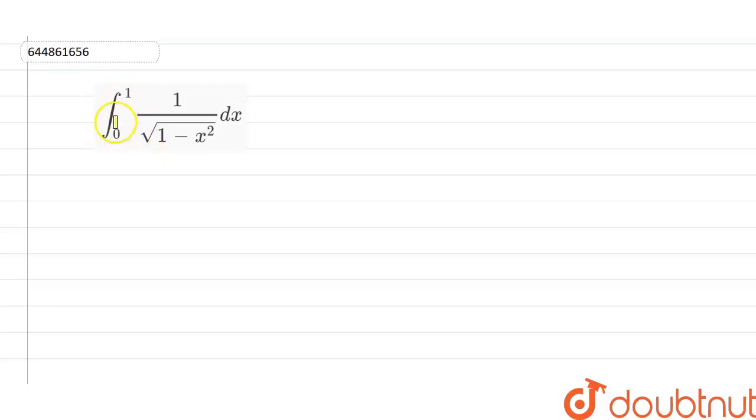Hello guys, we have integration 0 to 1, 1 upon root over 1 minus x square dx. This can be written as integration 0 to 1, dx upon root over 1 square minus x square.